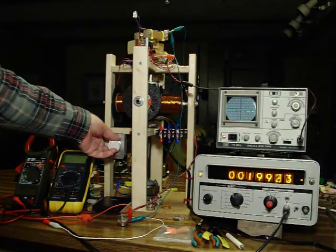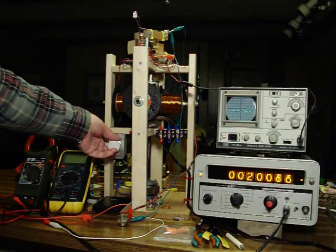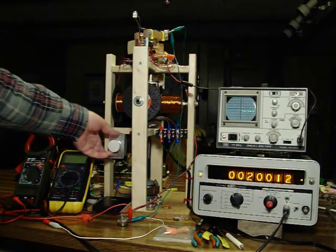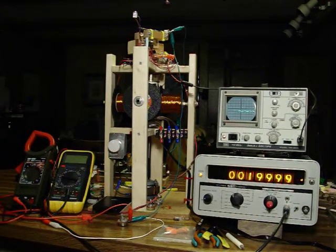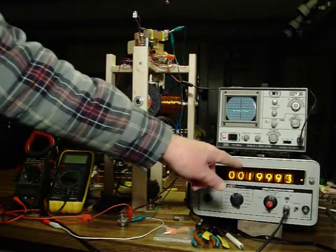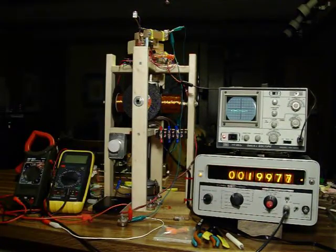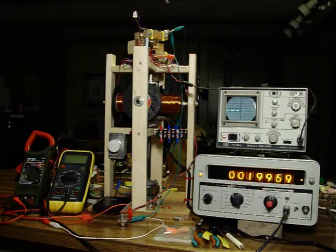We're going to adjust the generator to run at approximately 20,000 microseconds. The counter is reading in what's called period count, which is time, frequency being the inverse of time.